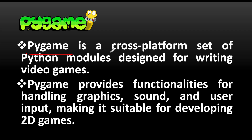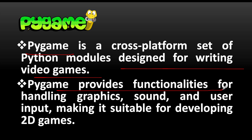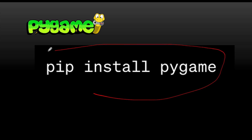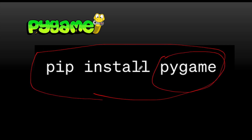In this series we are planning to use PyGame. PyGame is a library — meaning you have to install it before you can use it — and it is designed for writing video games. PyGame provides functionalities for handling graphics, sound, and user input, making it suitable for developing 2D games. To install, run: pip install pygame, or pip3 install pygame.